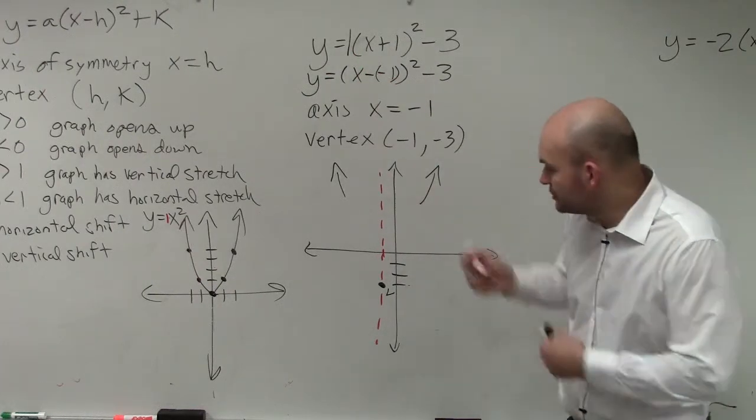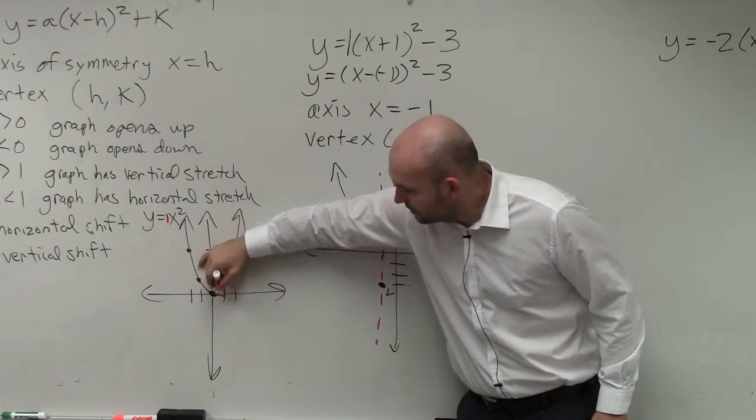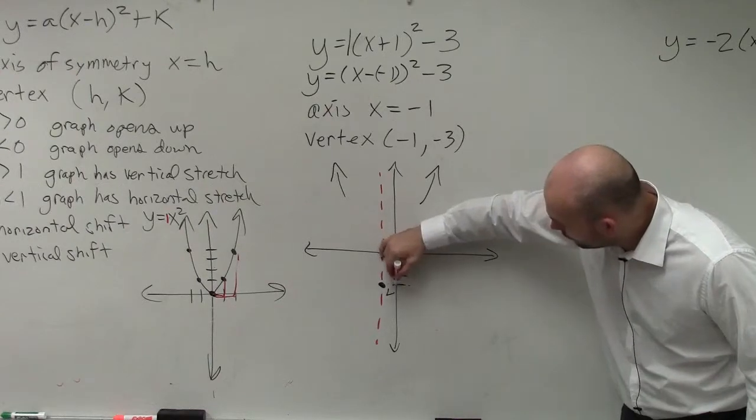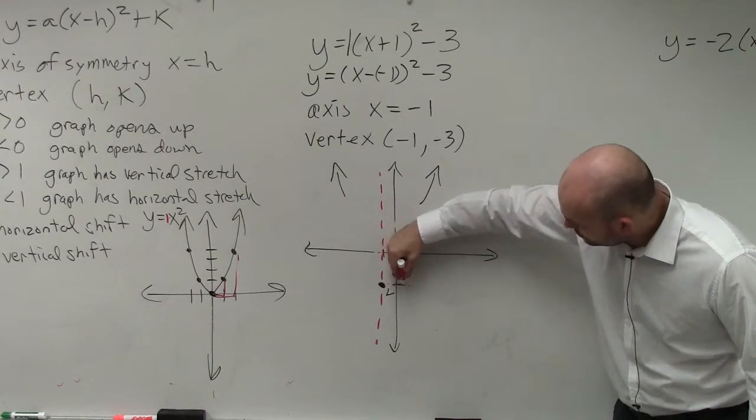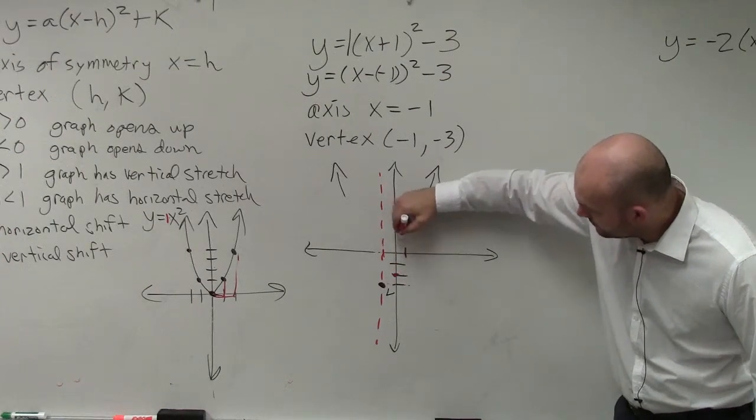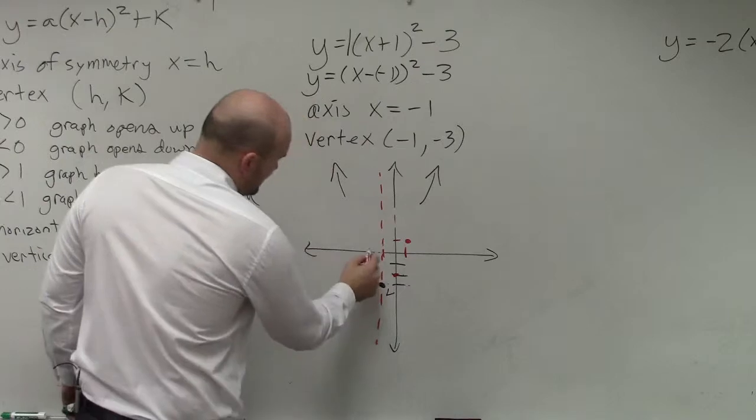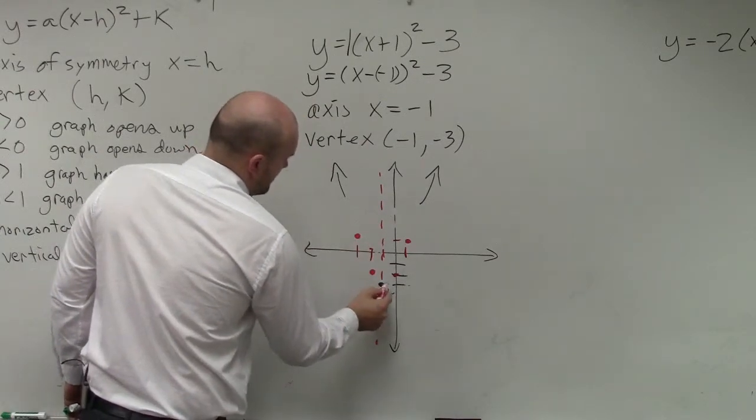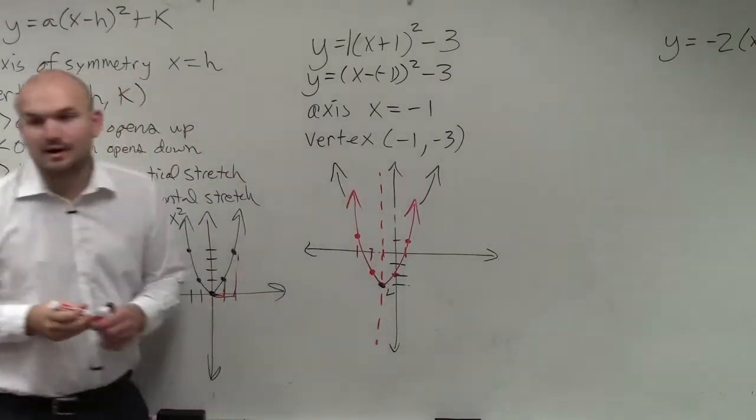Go over 1, up 1. Over 2, up 4. So I'm just going to go over 1, up 1. Over 2, up 4. 1, 2, 3, 4. And then I'll do that on the other side. And now I have my graph.